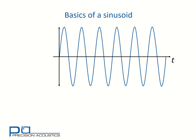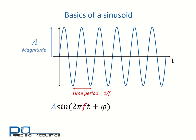Here's a graphical representation, and here's the equation describing it. The amplitude of the sinusoid is marked on the graph, and the time period, which is the time it takes for the signal to repeat itself — which is 1 over frequency — is also marked. The phase term relates to whereabouts on the cycle we start. A phase change of 360 degrees is one complete cycle, so as drawn we have a phase of 0 degrees.